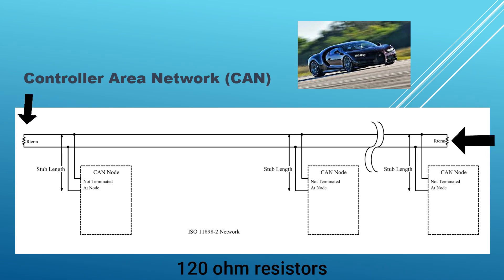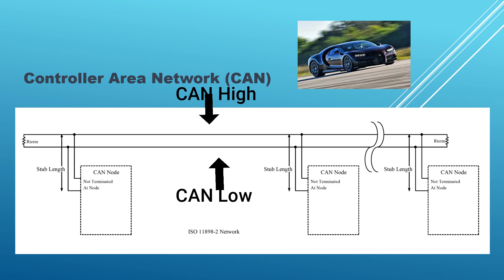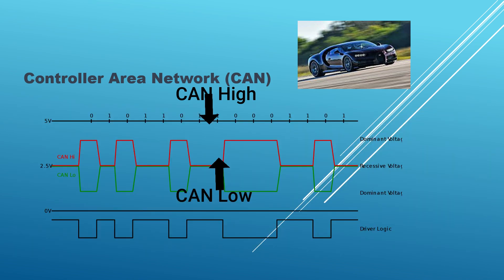These CAN lines are terminated with 120 ohms at both ends. These resistances are required to avoid signal reflection at the end of the CAN line. CAN uses two lines, just like I2C. These lines are called CAN high and CAN low. Using these two lines, we can transfer the data. CAN is a differential bus, hence bits are defined by the difference in the voltage level of CAN high and CAN low.